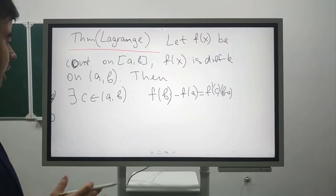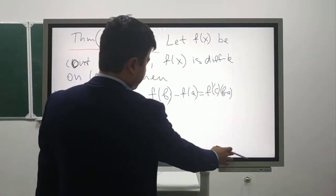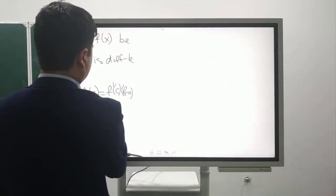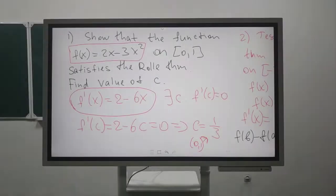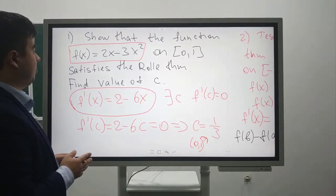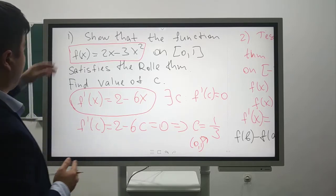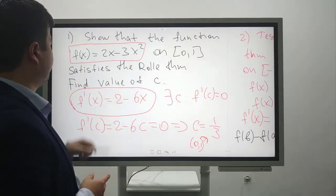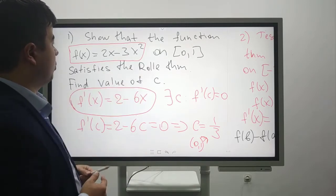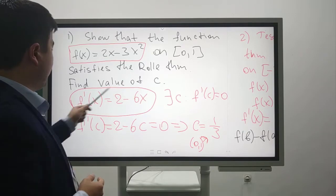Now we have two mean value theorems. Let's consider examples on the mean value theorems. The first one: show that the function f(x) on the interval [0, 1] satisfies the Rolle theorem, and find the value of c.